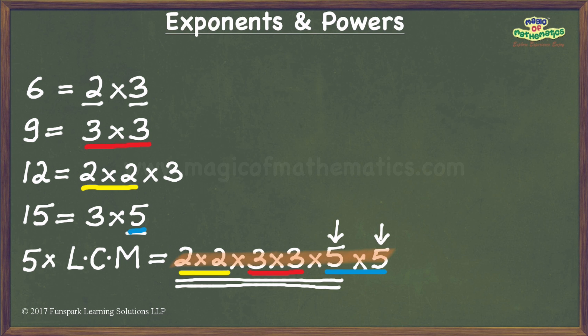If we compute this product, we get 900 as our answer. In other words, 900 is the least perfect square which is exactly divisible by the given numbers.